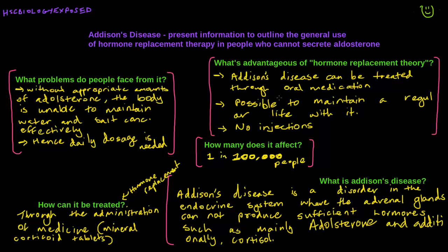Hey everyone, sorry I haven't been making videos recently — it's mainly been because my mic hasn't been working and I've finally got a new one so I can start making them again. Today we'll be covering Addison's disease. It's part of the maintaining a balance topic, and the dot point states: present information to outline the general use of hormone replacement therapy in people who cannot secrete Aldosterone.